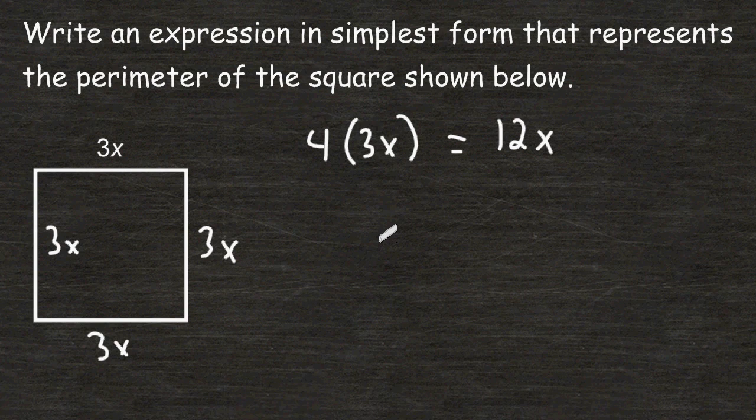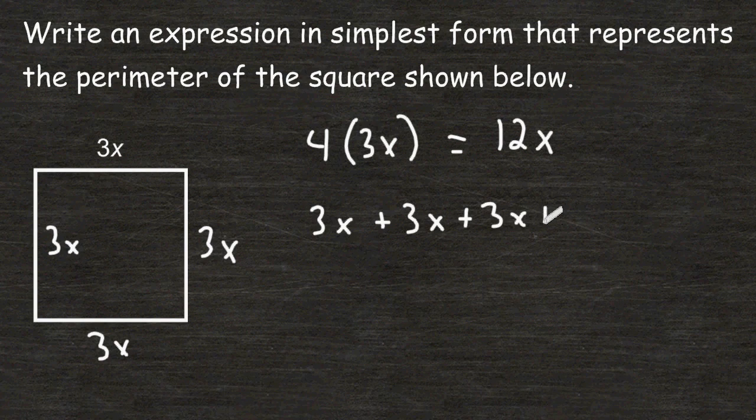Another way that we can find the expression that represents the perimeter of the square is simply by taking all four sides and adding them together. So we're going to add 3x to another 3x to another 3x and to a fourth 3x.